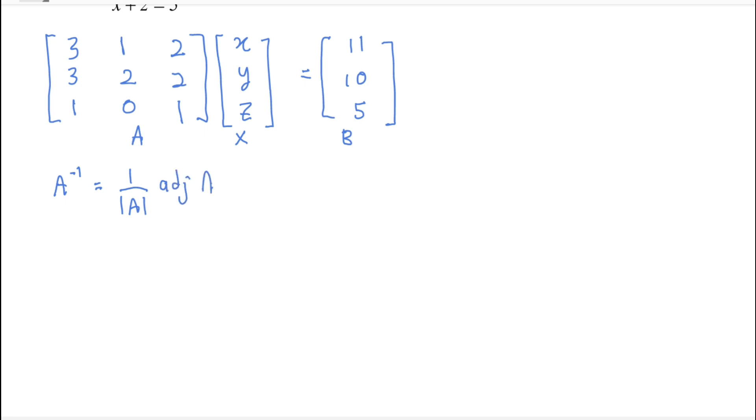Which is one over modulus A, adjoint of A. What is adjoint A? Adjoint A is the matrix of cofactor of A that we transpose.